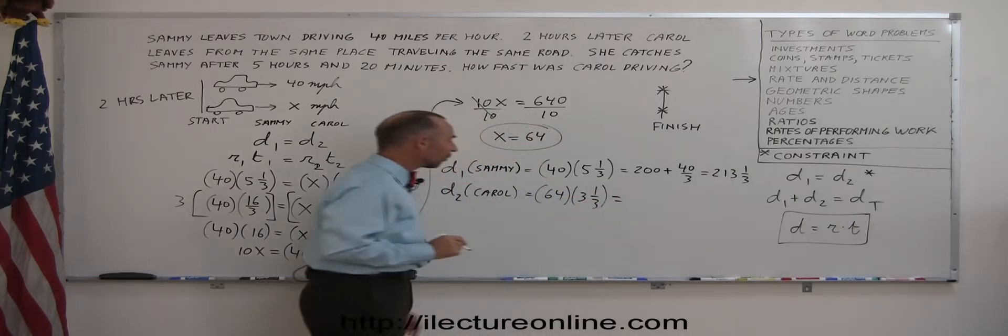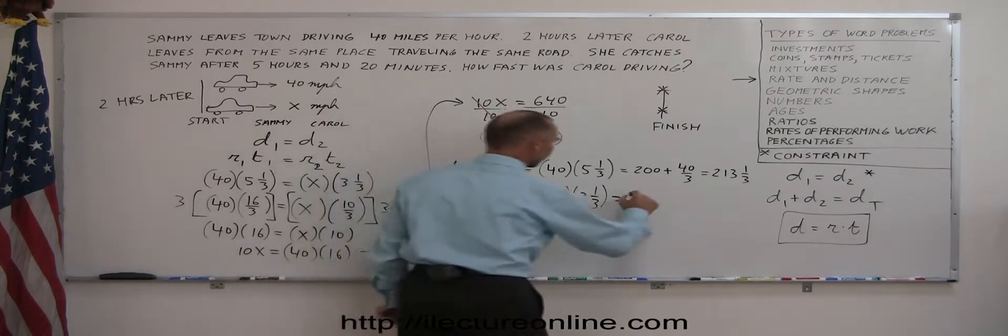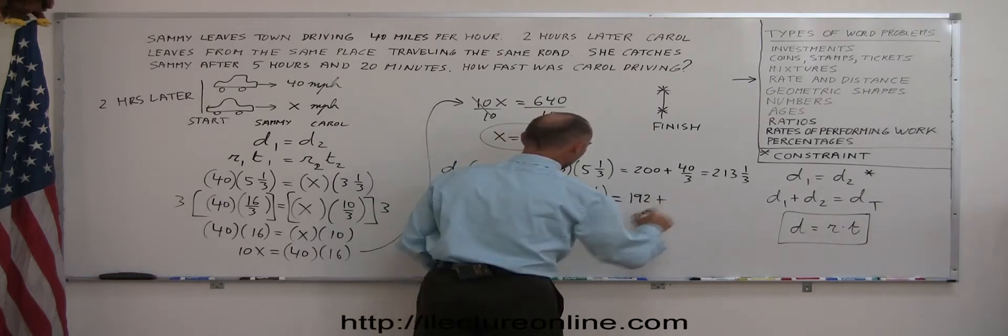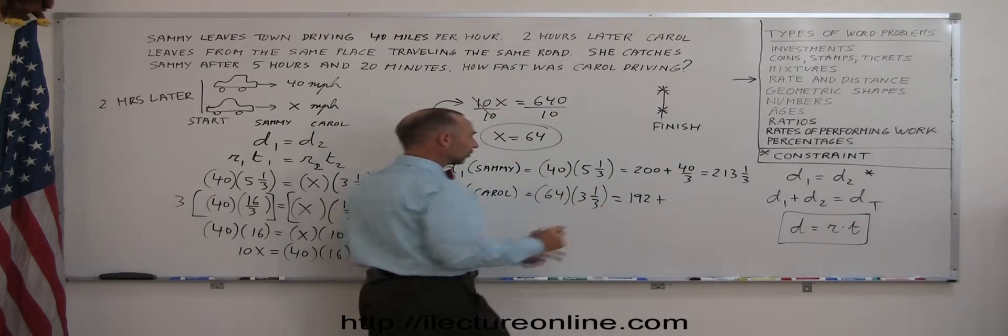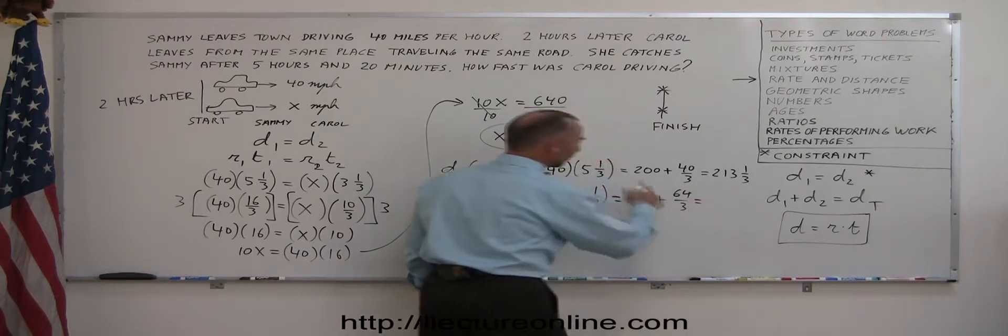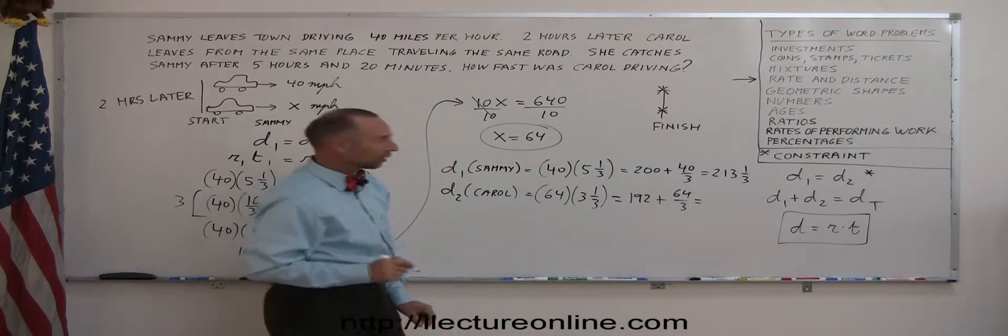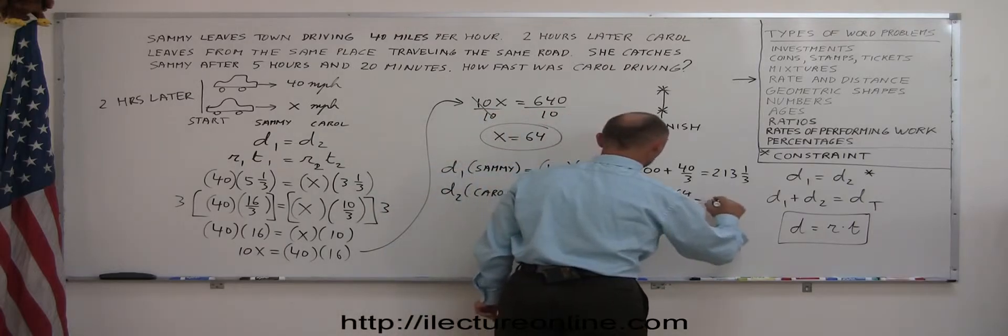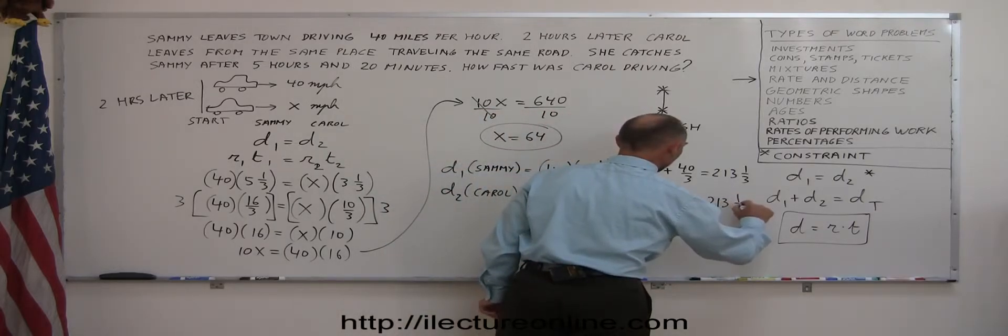So 3 times 64, that's 192. And 64 times a third, that's 64 divided by 3. And 3 goes into 64, 21 and a third time. So I add that there, I get 213 and a third.